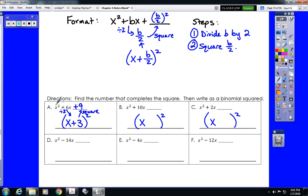That completes the trinomial and writes out the binomial squared. So 10 divided by 2 is 5. 5 squared is 25. 2 divided by 2 is 1. 1 squared is 1. Hopefully this makes sense.